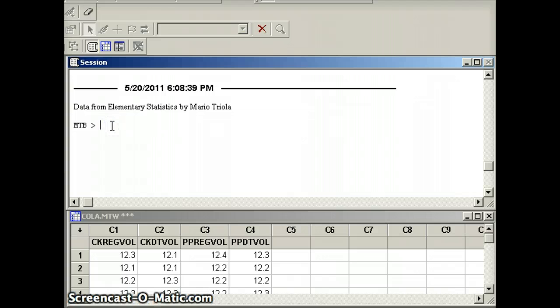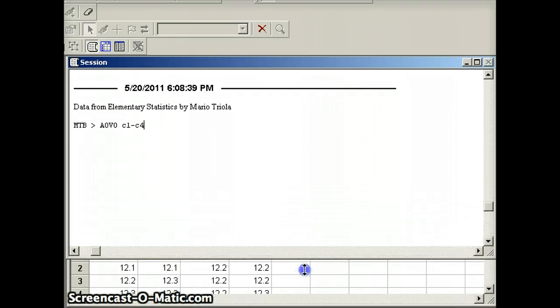And we're going to come up here and the command that we use is AOVO. What does that stand for? Analysis of Variance One Way, AOVO. We have data in C1 through C4. And we will see what that output is going to look like. And then we'll analyze what it means.